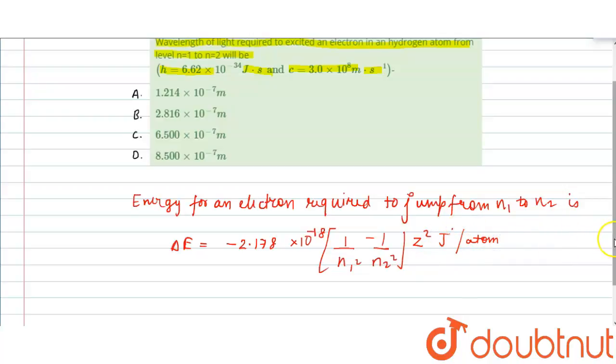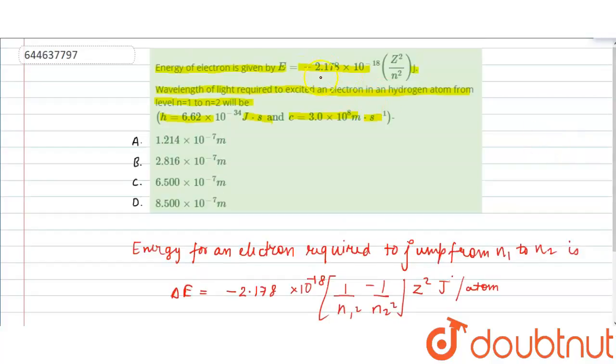This equation was derived from this itself. E1 would be equals to minus 2.178 times 10 to the minus 18 z squared by n1 squared.